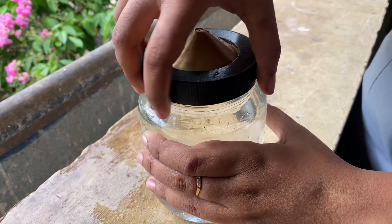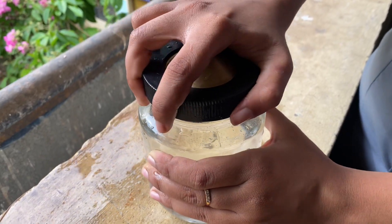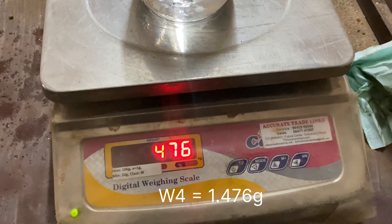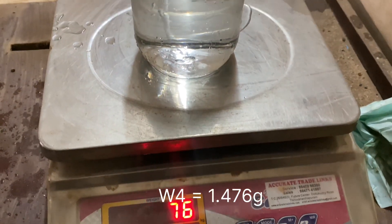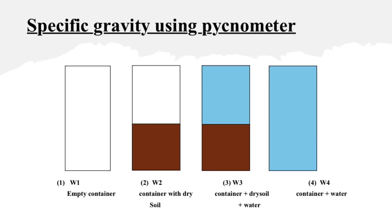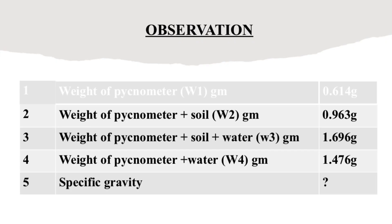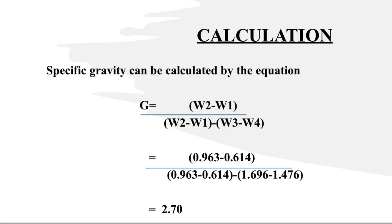From our observation table: W1 was the empty container, W2 was the container with dry soil, W3 was the container with dry soil and water, and W4 is the container with only water. Using these observations, we find the specific gravity using the formula: G = (W2 − W1) / ((W2 − W1) − (W3 − W4)).